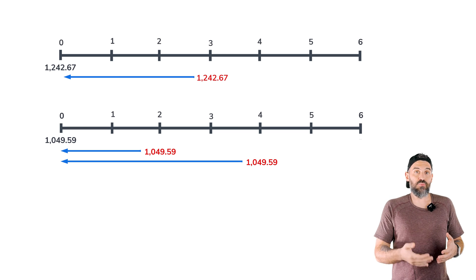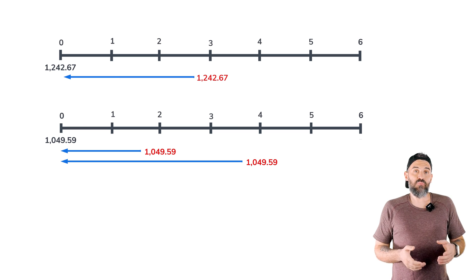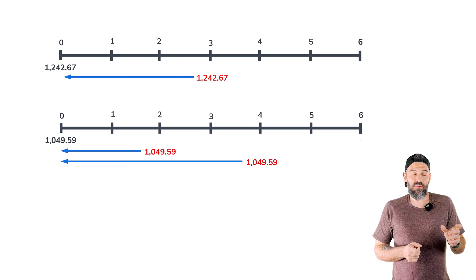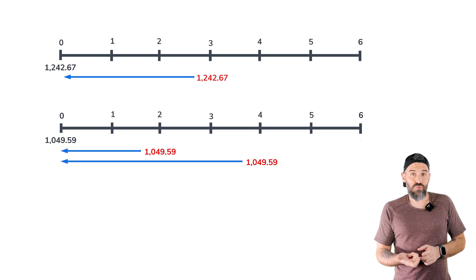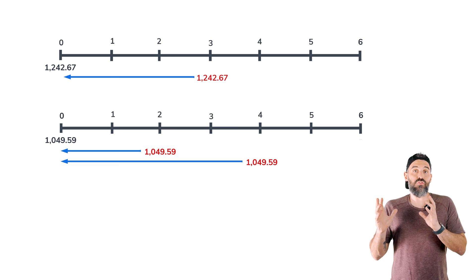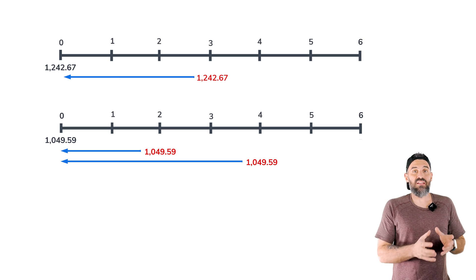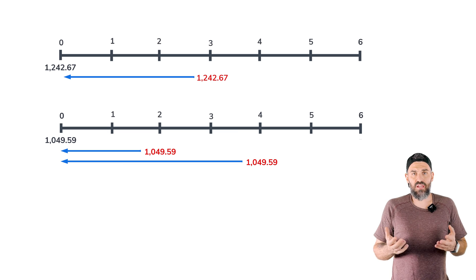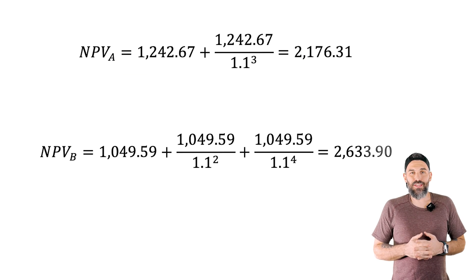For the second project, since we're going to be repeating it three times, you would have the net present value at time zero, then you would have it again at time two and again at time four. Once again, we're going to take those future NPVs, bring them back to time zero just by discounting and adding them all together.